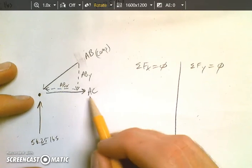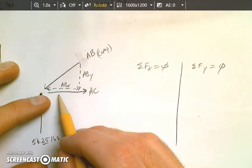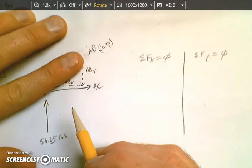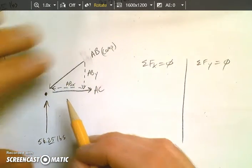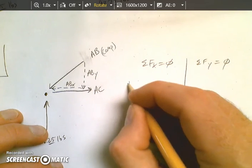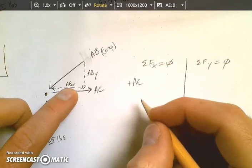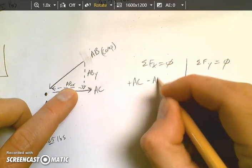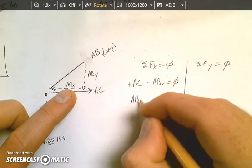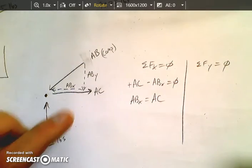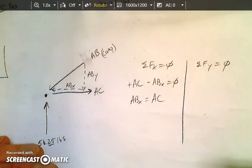Let's look in the X direction at what we have. I see two forces in the X direction. So imagine this one is gone. It's now replaced with these two forces here. I see a positive AC, and I see a negative ABX. Therefore, ABX equals AC. Well, I don't know either of those. So I'm going to move on.